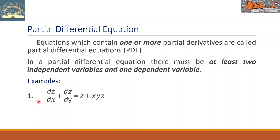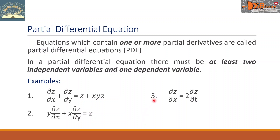For examples: Example one, partial derivative of z with respect to x plus partial derivative of z with respect to y equals z plus xyz. Example two, y times partial derivative of z with respect to x plus x times partial derivative of z with respect to y equals z. Number three, partial derivative of z with respect to x equals two times partial derivative of z with respect to t. Example four, second partial derivative of y with respect to t equals z squared times second partial derivative of y with respect to x.